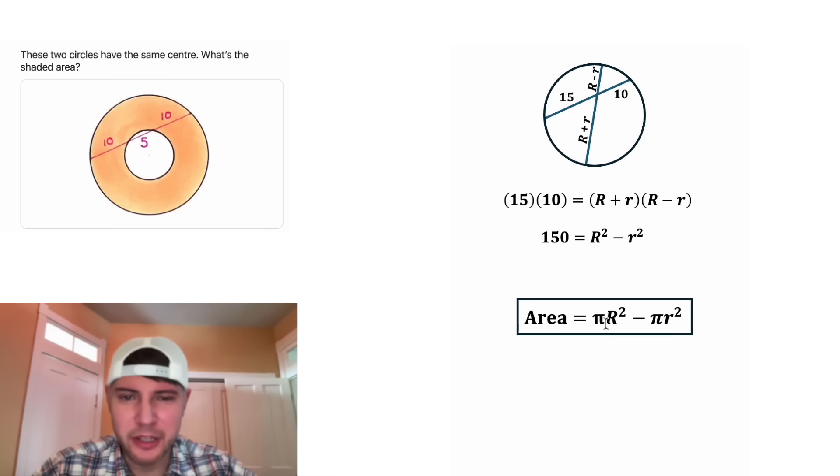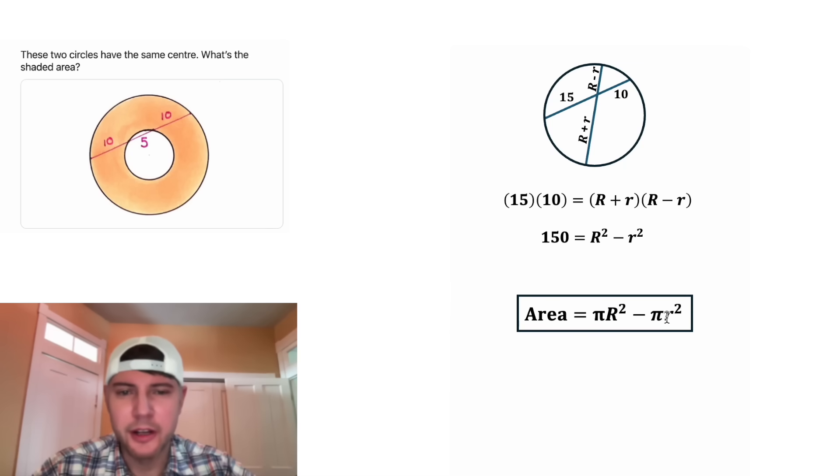I'm noticing in our area formula we have π R² minus π r². The only difference is they're both being multiplied by π. So let's multiply both sides of the equation by π. On the left-hand side we'll have 150π, and on the right-hand side this π will distribute to both of these: it'll be π R² minus π r².